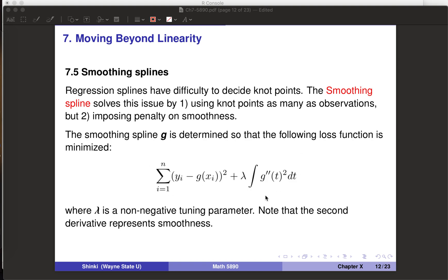The smoothing spline is determined so that this loss function is minimized. The first part is basically the error term, the sum of squared errors, so it's the same as linear regression. The second term is the integral of g double prime of t, the second derivative, squared. Second derivative represents smoothness usually. We integrate over all t, so this is the overall smoothness of the curve.